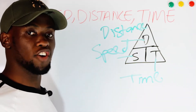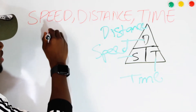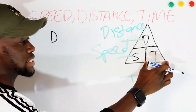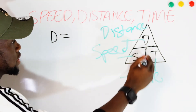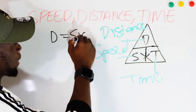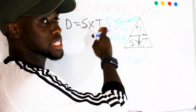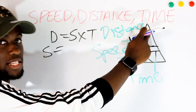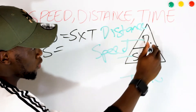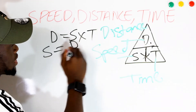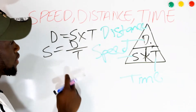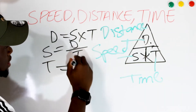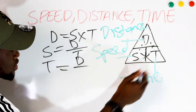Now let's look at the formulas. For distance, since D is on top and speed and time are on the sides, we can say D equals S multiplied by T — speed times time equals distance. For speed, since distance is on top and time is on the bottom, speed equals distance over time. And for time, time equals distance over speed.